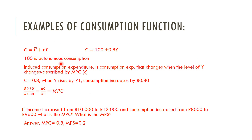Here's an example of a consumption function. In this instance, your autonomous component is equal to 100 — that would be your vertical intercept if you plotted it. And little c would be given by 0.8. So the marginal propensity to consume is the change in consumption, 80 cents, as income changes by one rand.